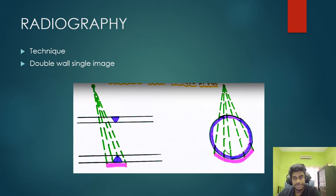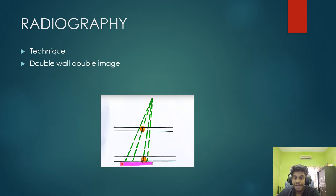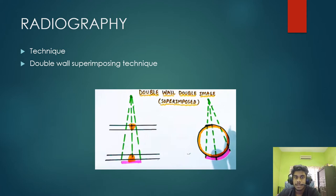This is a double wall double image, which is very simple where it has an offset, and both the top and bottom weld spots can be recorded on one single film. And last is the double wall superimposing technique, where superimposing is just an overlay of both defects on one film.